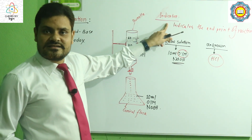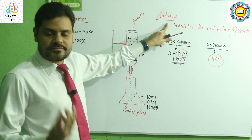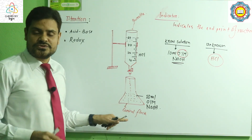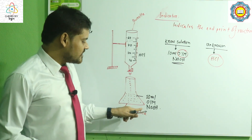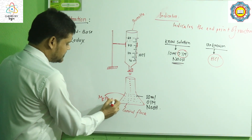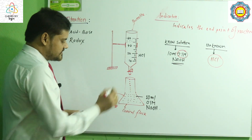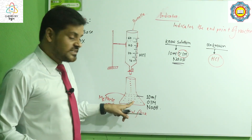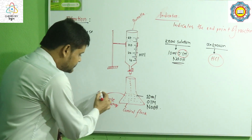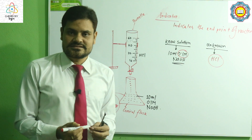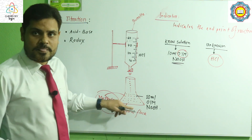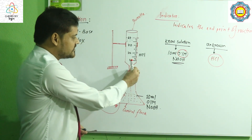We use indicators like methyl red and methyl orange. These indicators are colorless in basic medium. If we use some drops of methyl orange here, this indicator doesn't show any color in basic medium. But when the solution becomes neutral or acidic, the methyl orange shows its color. When we can see the color change at the end of the reaction — in neutral medium — we stop the screw.